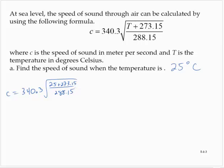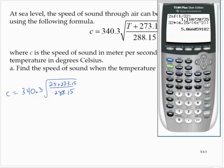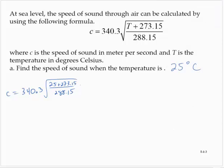Let's throw that into the calculator. 340.3 times the square root — now be careful here, we have some addition in the numerator. Maybe we should go ahead and simplify the numerator first.